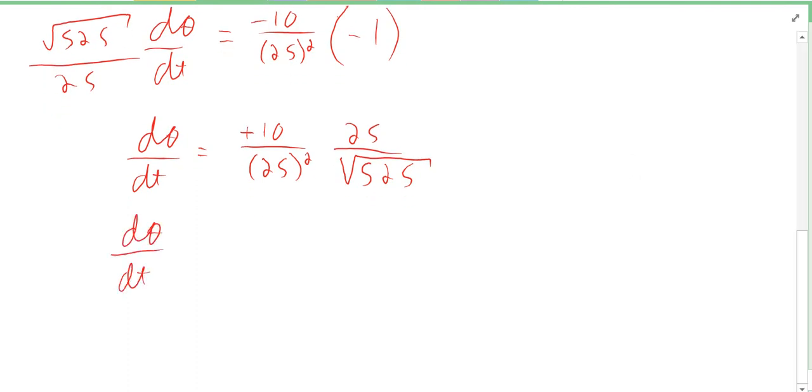So we can cancel out a 25 because we got 25 squared here. 10 and 25 are going to cancel out to 2 and 5. So it's really two-fifths there. And how can we simplify down the square root of 525?